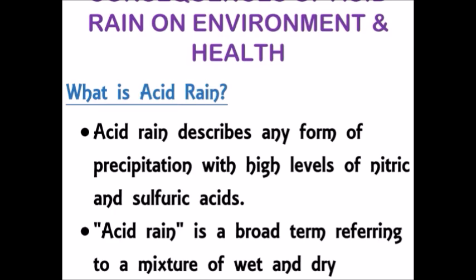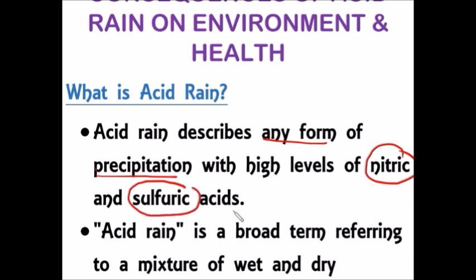How can we define acid rain? We can define acid rain as any form of precipitation with high levels of nitric acid and sulfuric acid.